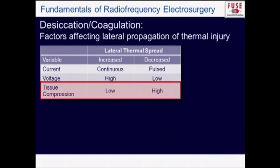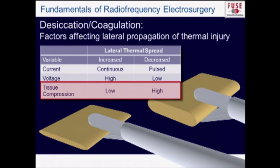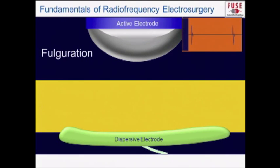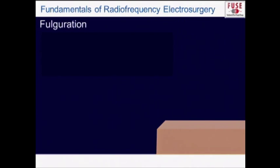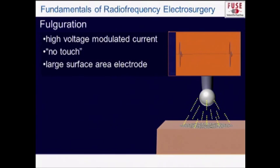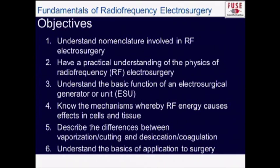Two additional factors: tissue compression matters — compressing tissue firmly requires less energy, while a large thick clump of tissue requires far more joules. Fulguration uses modulated output in non-contact mode, producing very superficial coagulation of about half a millimeter depth. Fulguration requires high-voltage modulated current, no-touch technique, and a large surface area electrode — it is integrated into argon-based coagulators. Thank you and enjoy the rest of the meeting.